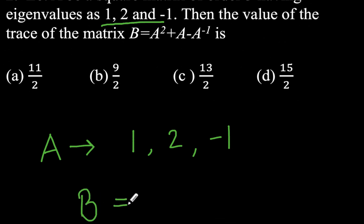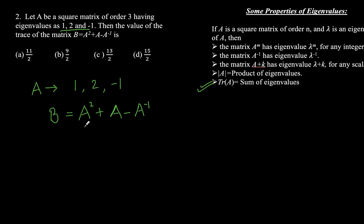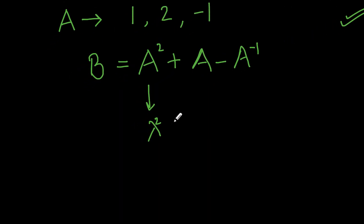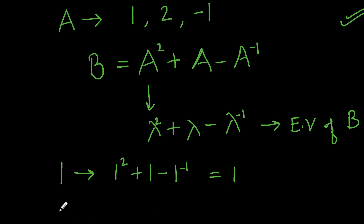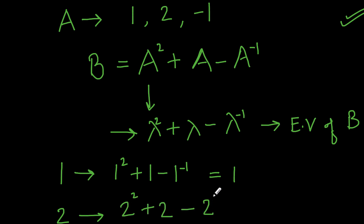For matrix B = A² + A - A⁻¹, the eigenvalue formula gives λ² + λ - λ⁻¹ for each eigenvalue λ of A. For λ=1: 1 + 1 - 1 = 1. For λ=2: 4 + 2 - 1/2 = 11/2.